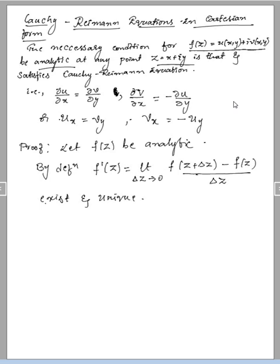In Cartesian form, f(z) can be expressed as f(z) = u(x, y) + i·v(x, y), where u and v are real-valued functions of x and y.